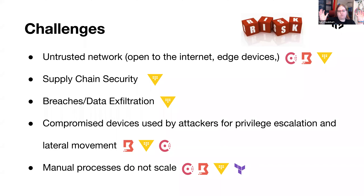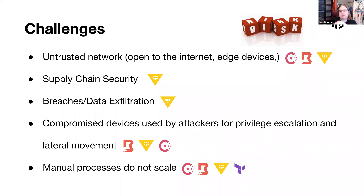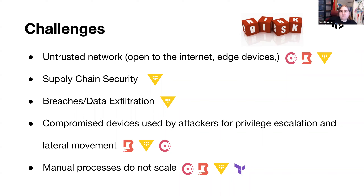Taking this back to the challenges Guy went through earlier — let's highlight how they map to each of these solutions. Starting with untrusted networks, edge devices, and networks exposed to the internet where you can't use IP addresses to configure access — especially in an environment where devices and even entire networks go up and down all the time. This is where you can use Consul for secure service communication, Boundary to broker dynamic secure access to these edge devices, and Vault to make sure no secrets for these devices exist outside of a secure enclave.